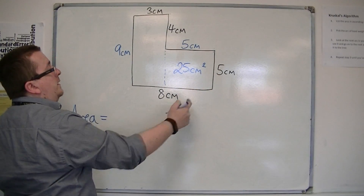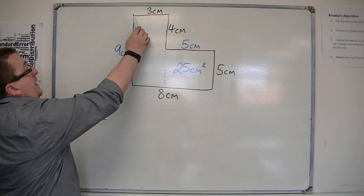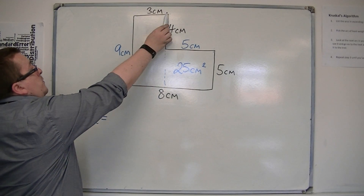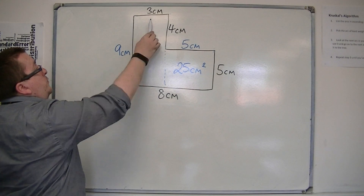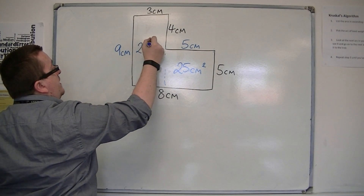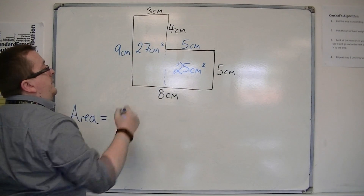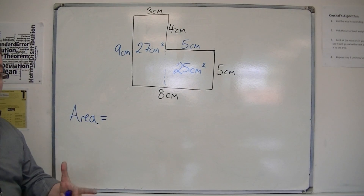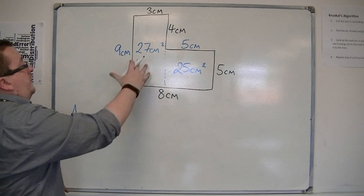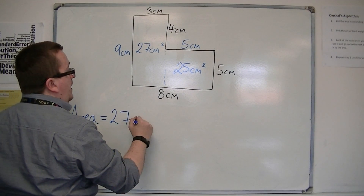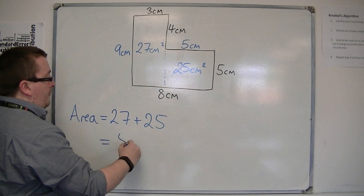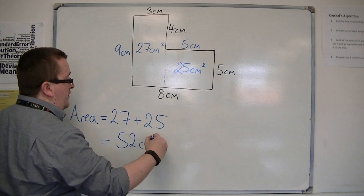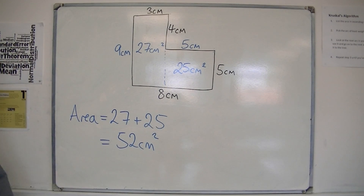Five by five. This rectangle is three by nine, so the area of this rectangle is three times nine — twenty-seven centimetres squared. The total area is twenty-seven plus twenty-five, which gives fifty-two centimetres squared. So that would be the area of the whole shape.